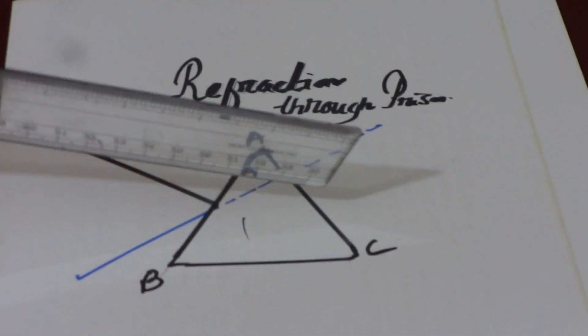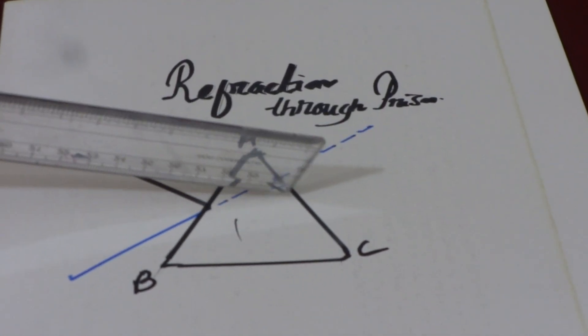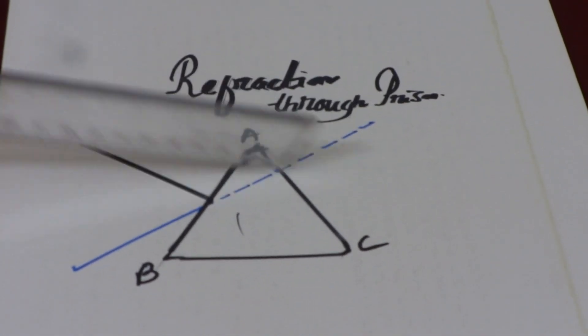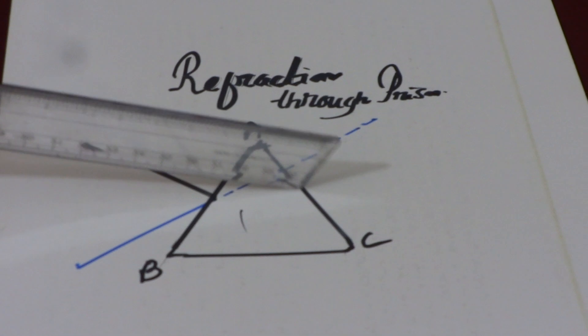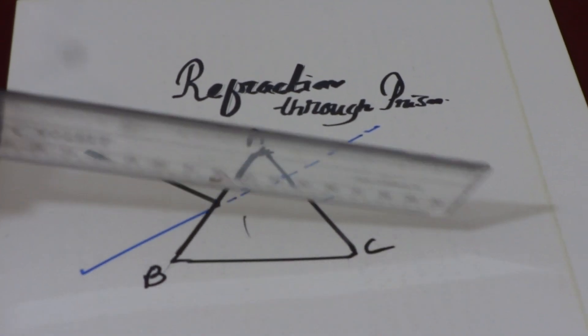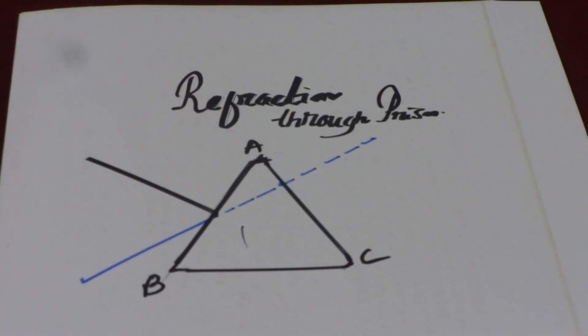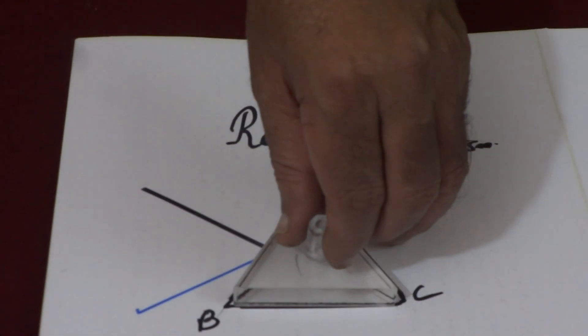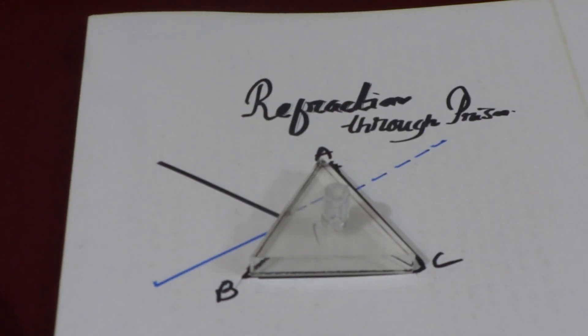And after that, it comes out from the denser medium to the air again from this AC surface. Then it will be moving away from the normal. Now, let us visualize how this is done first and then we will talk about certain other terms.